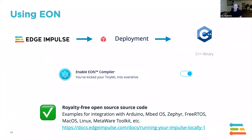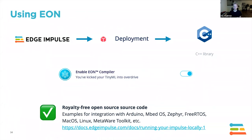Using EON is straightforward. Go to the deployment page, click the C++ library export, enable EON, and that's it. You get a royalty-free, open-source library that compiles with any C++ compiler. If we detect you're running ARM or ARC, we automatically load hardware optimizations. We have examples for integration with Arduino, Mbed OS, Zephyr, FreeRTOS, macOS, Linux, MetaWare tools, and more — all on the docs page.